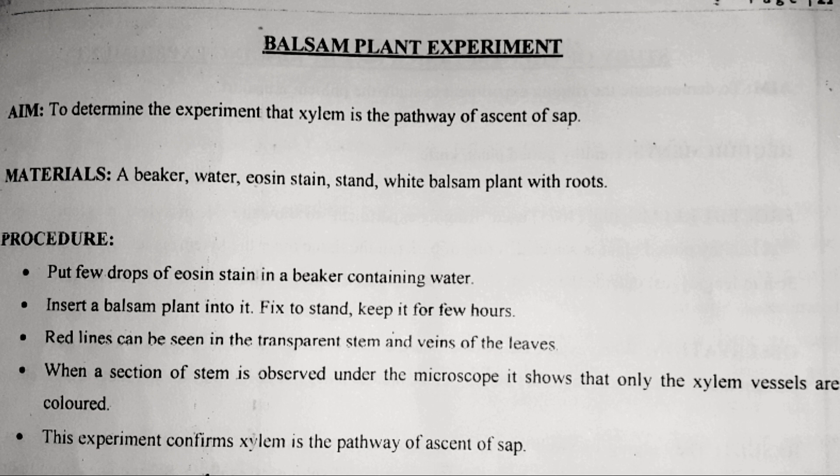Next, the balsam plant — with roots or even without roots is fine. We can take a twig of balsam plant or a total plant along with roots. But preferably, it is better to choose a white color balsam plant. We are using balsam plant here because it has a transparent stem. Due to the presence of these transparent stems, we can easily observe the transportation of water and the path in the stem, even without dissection. That is only possible due to the transparent stems.